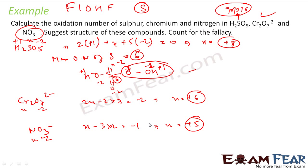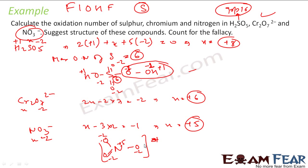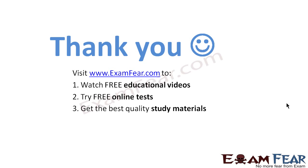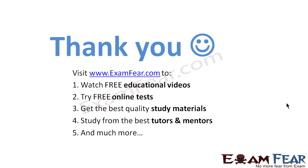The structure of NO₃⁻ has nitrogen at plus five and the three oxygens each at minus two, giving an overall charge of minus one. Thank you. Visit examfear.com to watch free educational videos, try free online tests, get the best quality study materials, and study from the best tutors and mentors. Thanks once again.